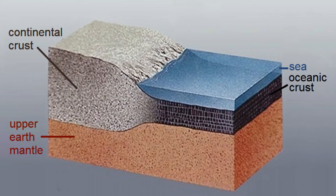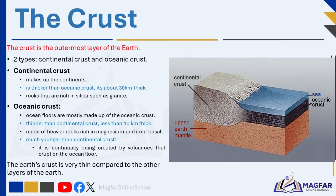The continental crust is usually about 30 kilometers thick and is made up of rocks that are rich in silica, such as granite. About 40% of Earth's surface is made of the continental crust. The oceanic crust is generally much younger than the continental crust because it is continually being created by volcanoes that erupt on the ocean floor. The Earth's crust is very thin compared to the other layers of the Earth.